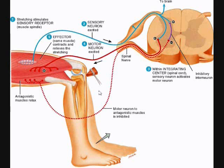This stretch reflex happens in most skeletal muscles, not just the quadriceps. For example, it applies to the biceps brachii, where the reciprocal innervation would be the triceps brachii, or in the triceps brachii, where the reciprocal innervation would be the biceps brachii. All skeletal muscles have this stretch reflex to protect them from over-stretching.